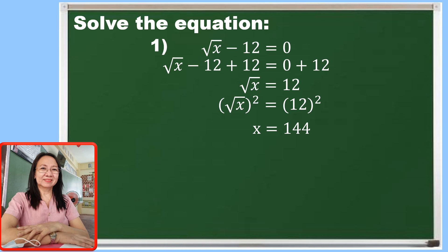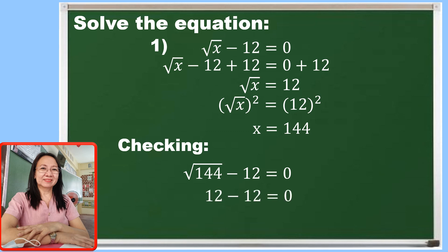Before we conclude, let us first do the checking. Substituting 144 for x, the square root of 144 minus 12 is equal to 0. Getting the square root of 144 which is 12, then 12 minus 12 is equal to 0. So 0 is equal to 0, and this is a true statement. Therefore, we can now say that the value of x is 144.